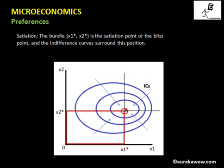After x1-star units of x1, x1 becomes a bad — earlier it was a good. Similarly, x2 was a good before x2-star units, and after x2-star units it becomes a bad. In the region where both x1 and x2 are goods, the indifference curves are well-behaved: convex to the origin and downward sloping. In region two, x1 is a good and x2 is a bad, so the indifference curves are upward sloping.